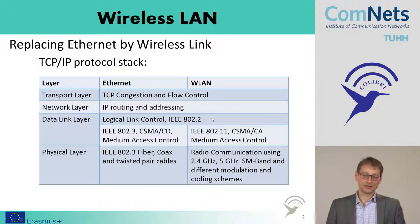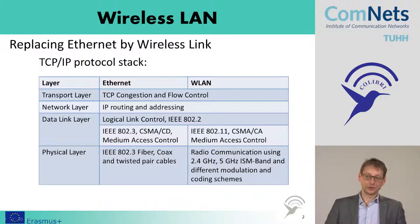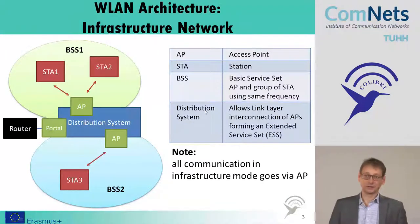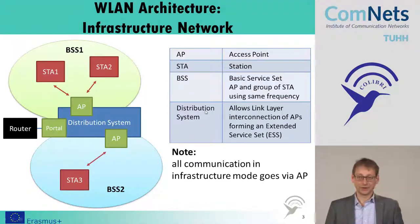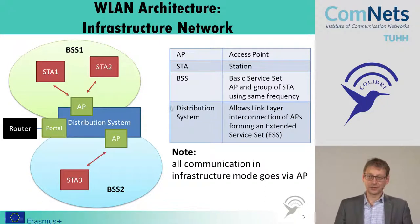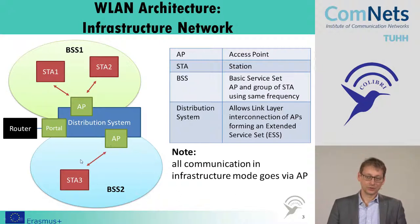The main message from this slide is: if you go from Ethernet to wireless LAN, we only exchange the medium access and the physical layer protocols. Looking at the architecture of a wireless LAN network, this becomes obvious — we have access points (APs), and the access points communicate with different wireless stations.